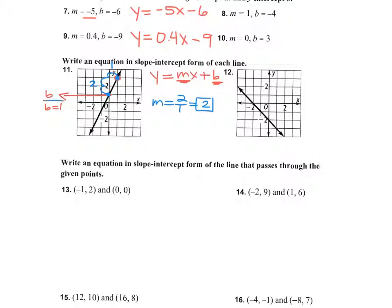So I have a slope of 2 and a y-intercept of 1. What is that equation going to look like? y equals — what goes before my x? 2, right, that's my slope. So y equals 2x plus my y-intercept, which is 1.